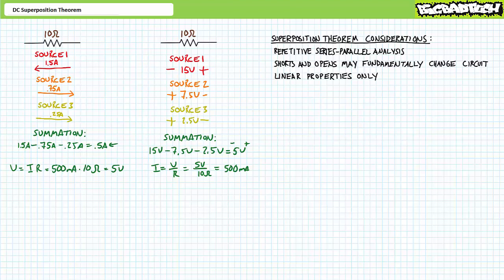The power dissipated by a component from the perspective of an individual source is essentially nonsense, and power effects are not additive. The final summated voltage and the final summated current, when polarity and direction have been properly accounted for, can be used to solve for final power. The final voltage of 5 volts and final current of 0.5 amps gives 2.5 watts — not the summation of individual source powers. Any summation of individual powers is utter nonsense because power is a non-linear property.